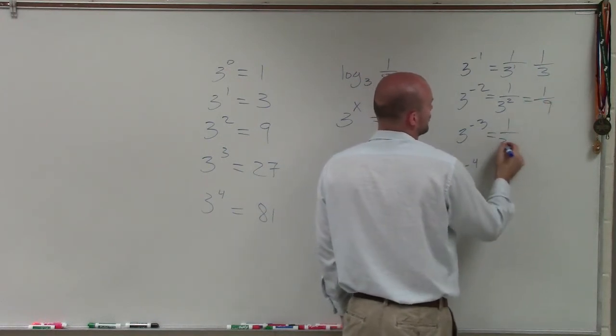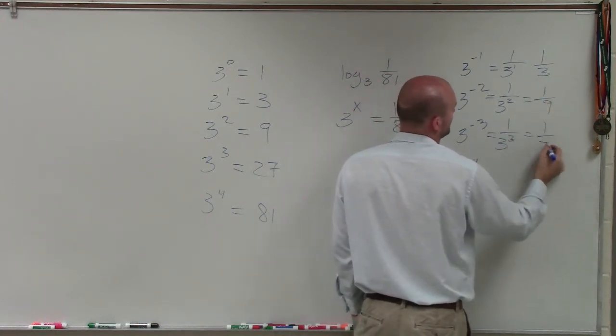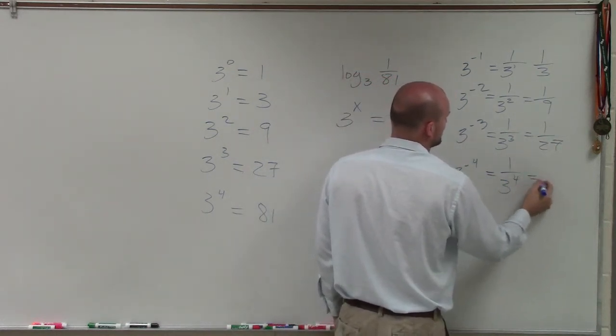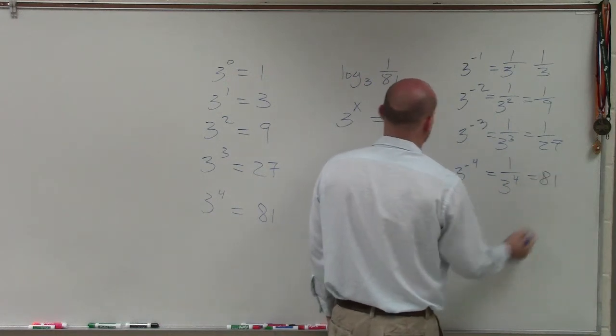This is 1 over 3 cubed, which equals 1 over 27. Hopefully you can see the pattern. This is 1 over 3 to the fourth, which equals 81.